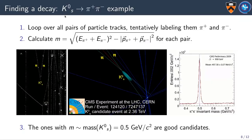To show an example, k-ons decaying to pions. In order to find such a decay, we need to loop over all pairs of particle tracks, tentatively label them as pi plus pi minus. Then we calculate m, which is the sum of energy squared minus the sum of momentum squared. This formula comes from special relativity. If we plot the results in a histogram, they pile up at the k-on mass. These are the real k-ons decaying to pions, and the rest are random tracks.